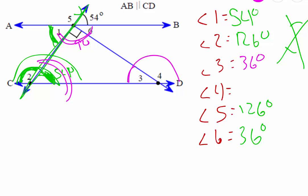Angle three and angle four are a straight angle so together those should equal 180 degrees. So if we take 180 minus the 36 degrees of angle three, angle four is 144 degrees.